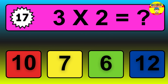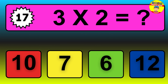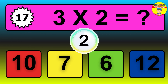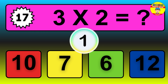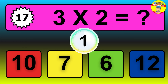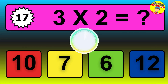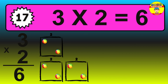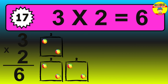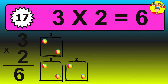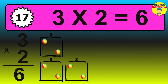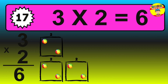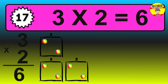Question 17. 3 times 2 equals what? The answer is 3 times 2 is 6. To calculate, we have 3 groups with 2 balls each one. So, how many balls do we have? 6 balls.